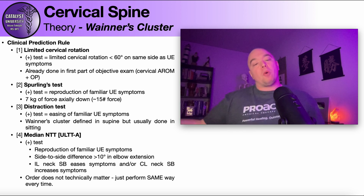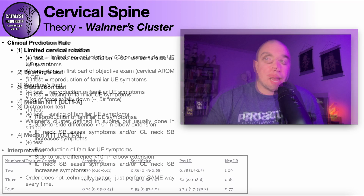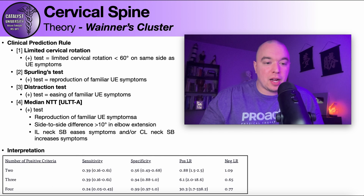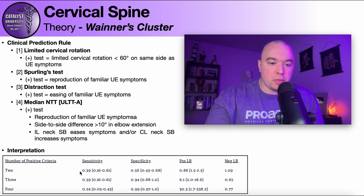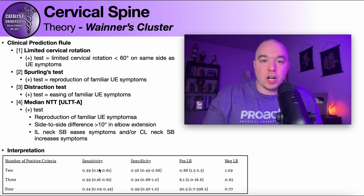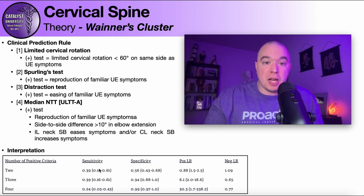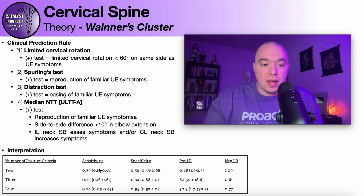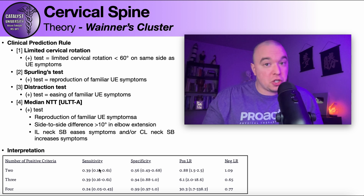One more note on sensitivities in the interpretation table: all of the pooled sensitivities are quite poor — the highest being 0.39, or 39%. Although this cluster is good for ruling in a cervical radiculopathy, it is terrible for ruling it out. We want sensitivities as close to one as possible, and these are far from it.